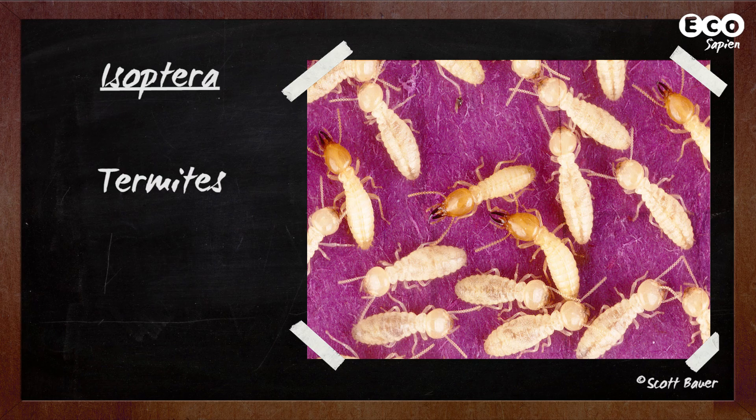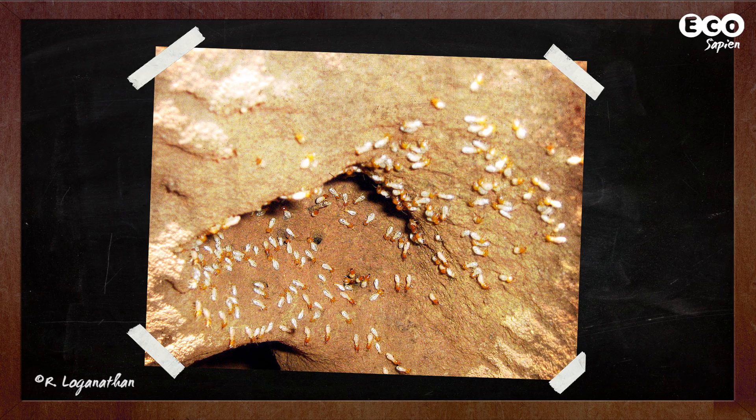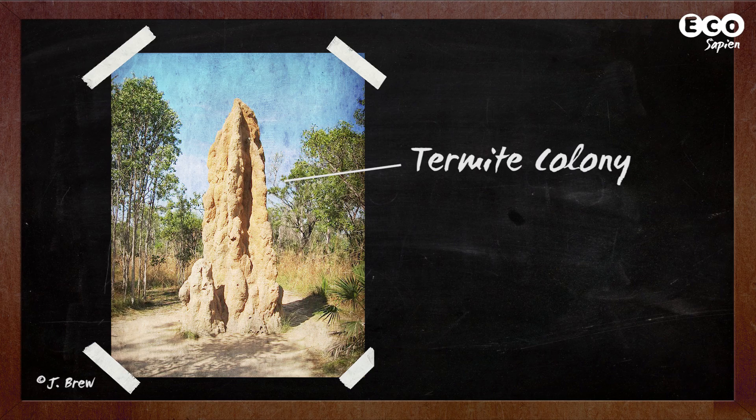Isoptera: termites, famous for their ability to eat wood, which they can only digest with the help of special bacteria living in their stomachs. Also one of only two orders in which social behaviour is found.